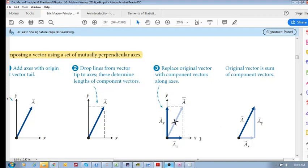And then you can see that you can also get this final vector by adding up these two components, vectorially. AX plus AY gives you A.